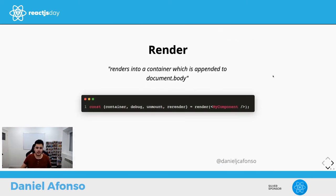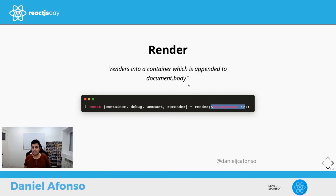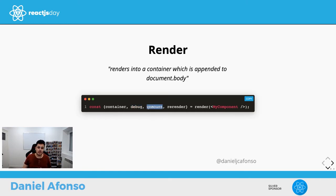The render function renders the component we pass it into a container, which is then appended to the document body. It also lets us destructure utilities from it: the container itself, a debug function showing the current DOM state, an unmount function, a re-render function, and queries — which we'll look at now.